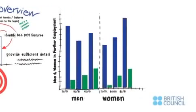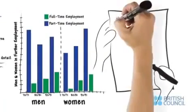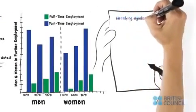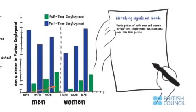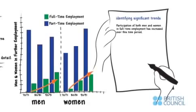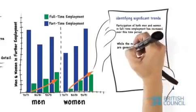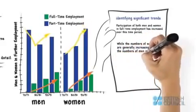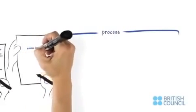Here's an example of identifying significant trends. Looking at this graph, we would say, from the graph, it is apparent that participation of both men and women in full-time employment has increased over this time period. However, while the numbers of women are generally increasing, the numbers of men in part-time employment are fluctuating.